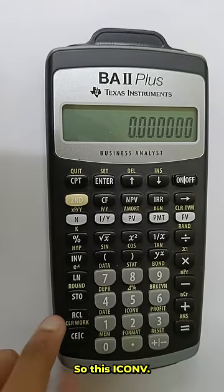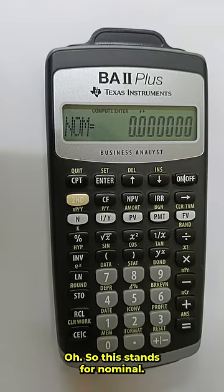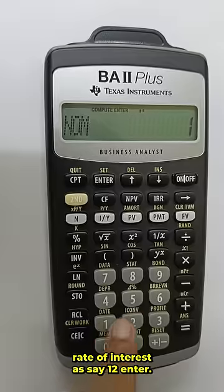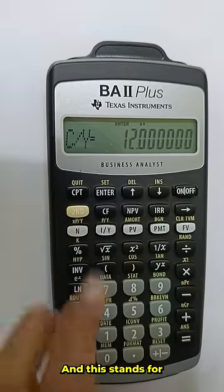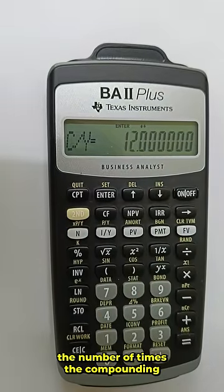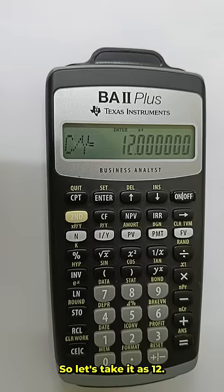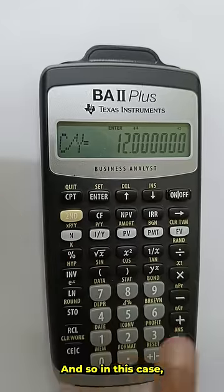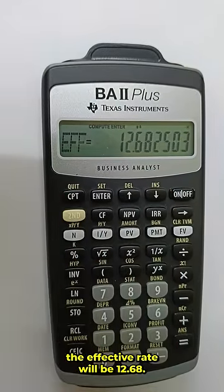This is ICONV. Suppose we press 2. This stands for nominal. If we take the nominal rate of interest as 12, enter, and this stands for the number of times the compounding is happening. Let's take it as 12, enter. In this case the effective rate will be 12.68.